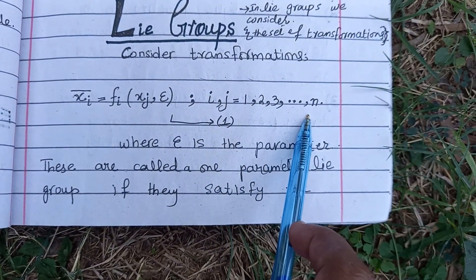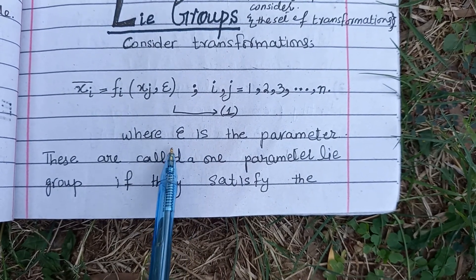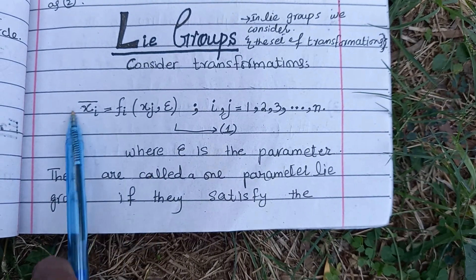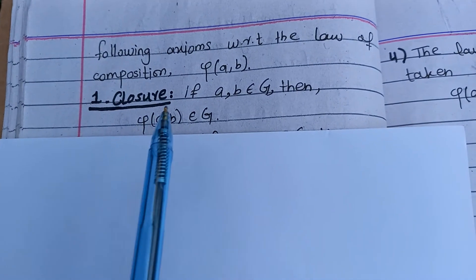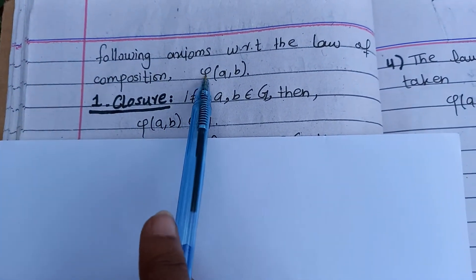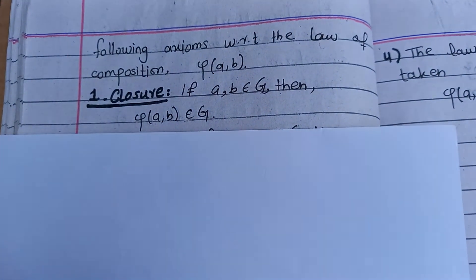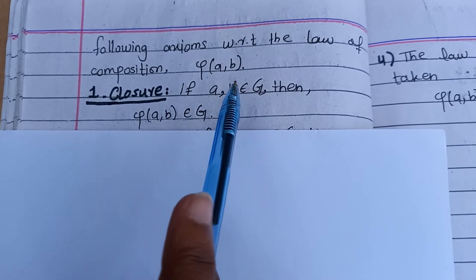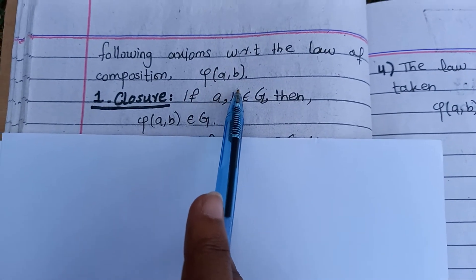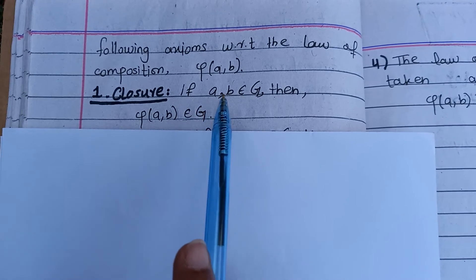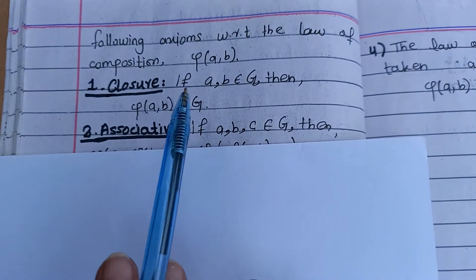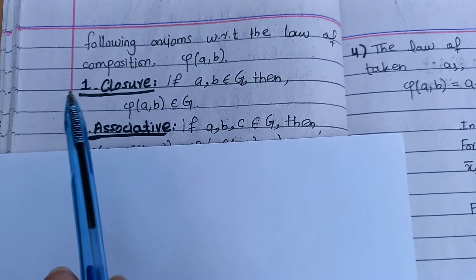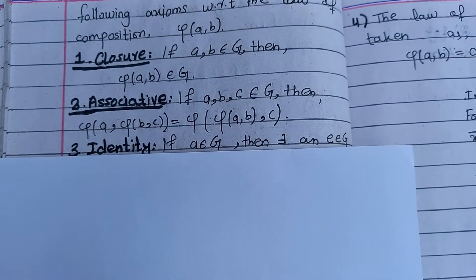These are called one-parameter Lie groups if they satisfy the following conditions. We will check the conditions defined in the definition on epsilon. The first condition concerns the law of composition: if a, b belong to G, then φ(a, b) belongs to G — meaning the closure law holds and the composition should belong to the group. The second condition is that the associative law holds: if a, b, c belong to G, then φ(a, φ(b, c)) = φ(φ(a, b), c).